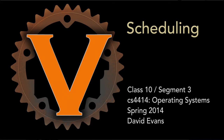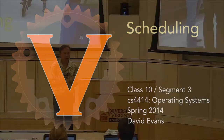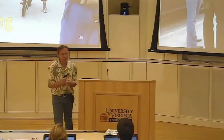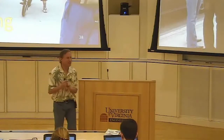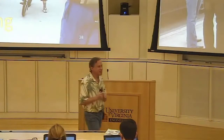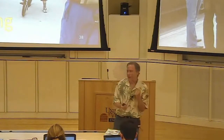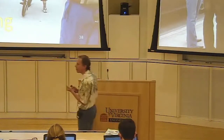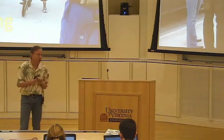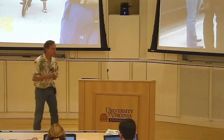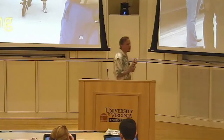I'm going to briefly introduce scheduling. We've been talking a lot about memory. What are the two most important resources the operating system tries to provide an illusion of sharing to processes? So there's memory and time, and we've mostly been talking about memory for the last few classes and earlier today. Scheduling is all about sharing time.